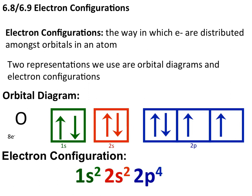Electron configurations are ways that we write out the location of specific electrons within an atom, and there are two ways that we represent this distribution of electrons. The first way is with orbital notation diagrams, where we show both the energy and the orbital type and the electrons present in that orbital. We have a 1s orbital that's filled, a 2s orbital filled with two electrons, and a 2p orbital filled with four electrons, corresponding to the eight total electrons in an oxygen atom.